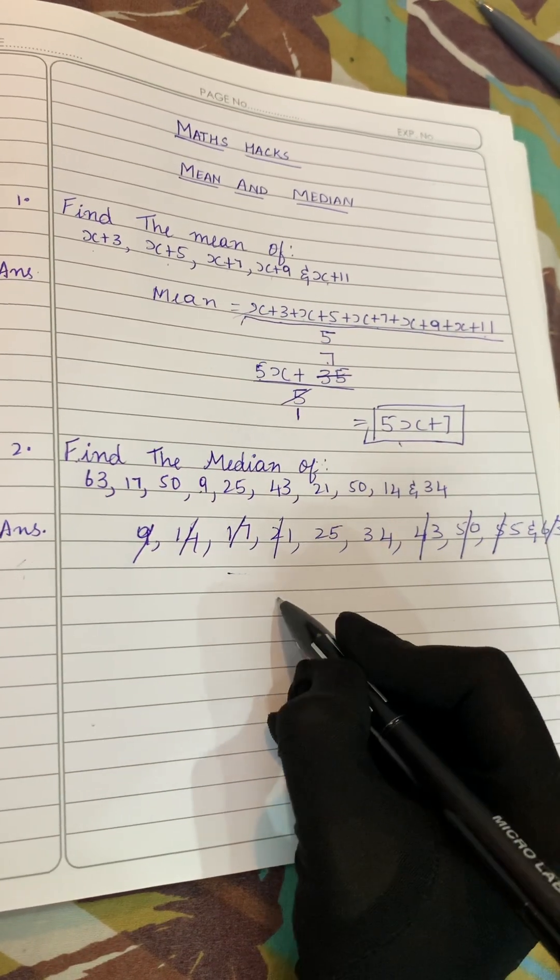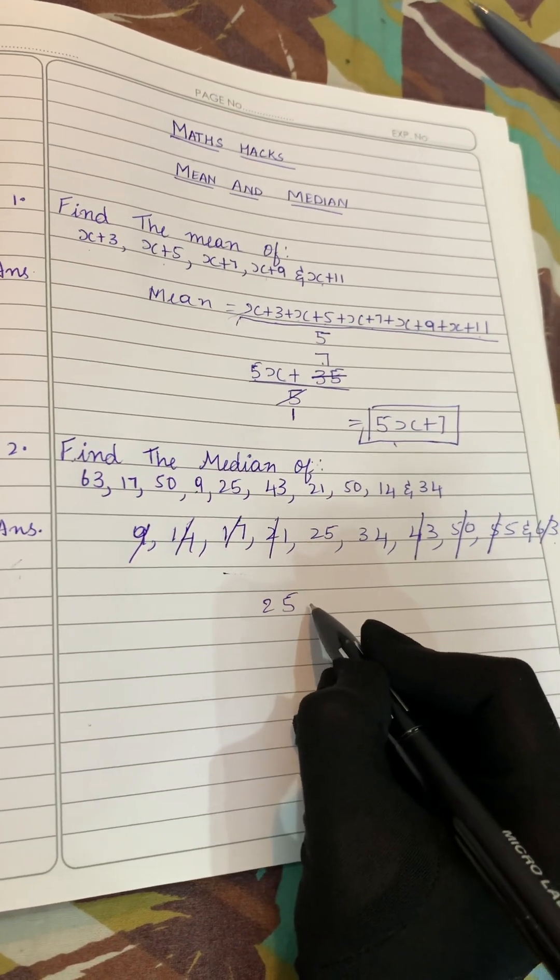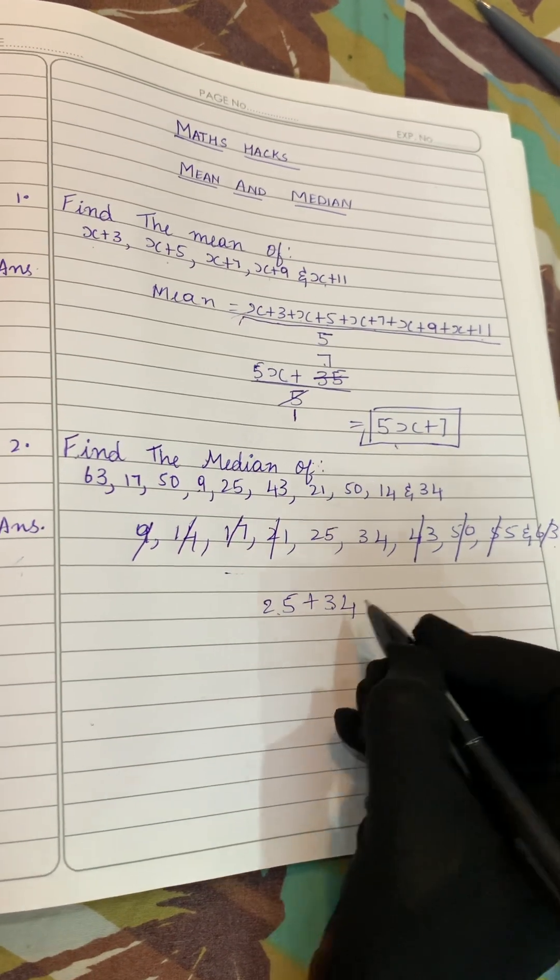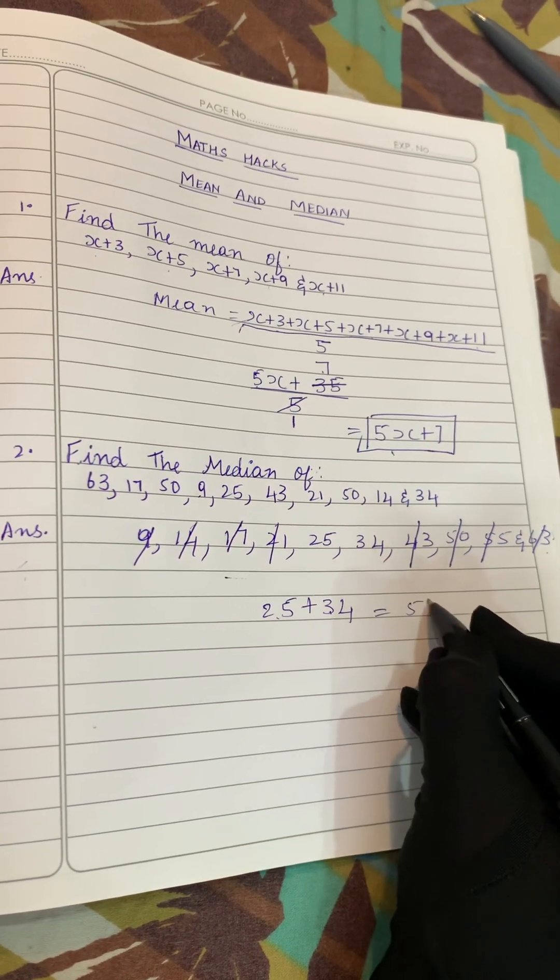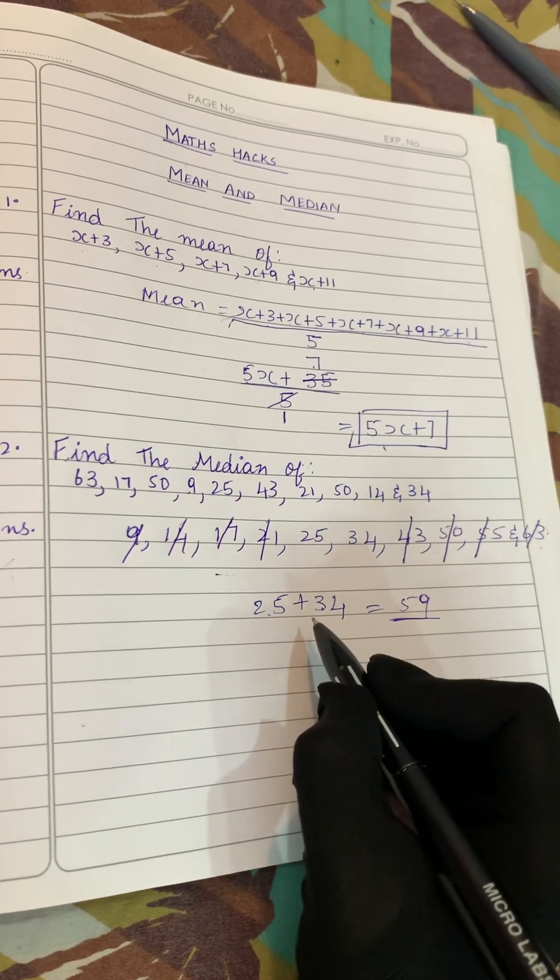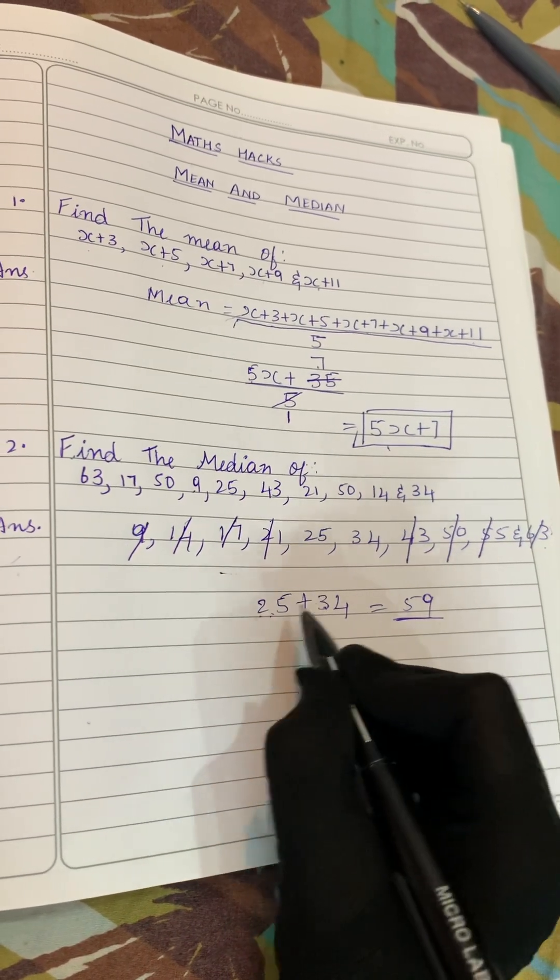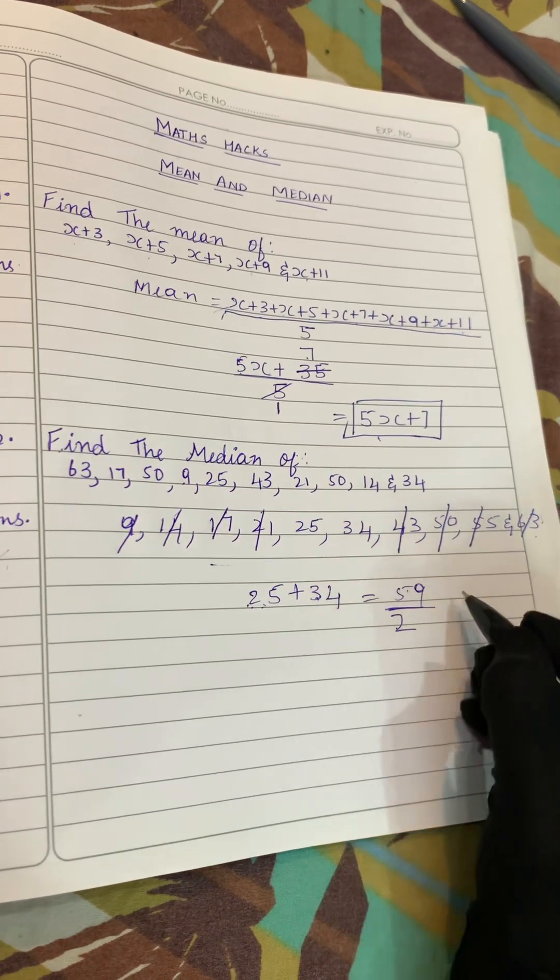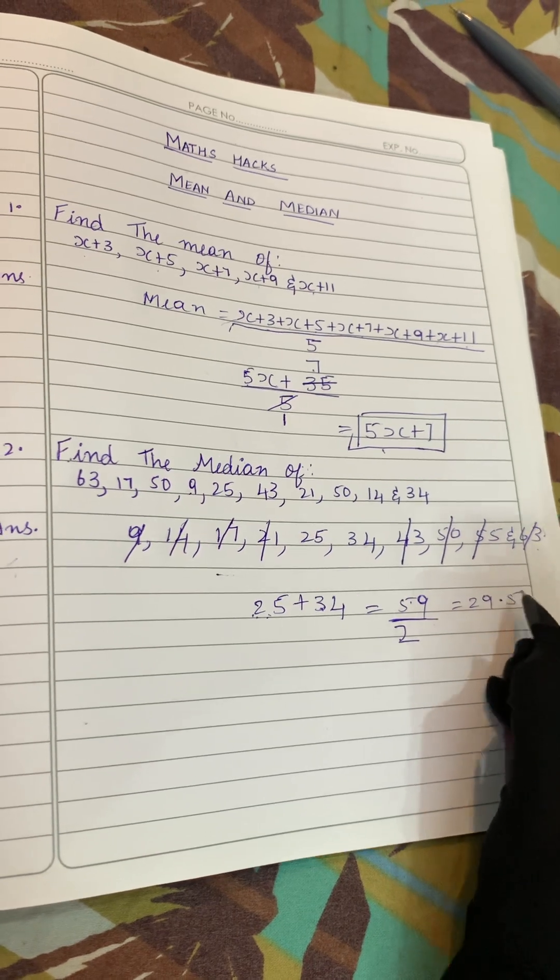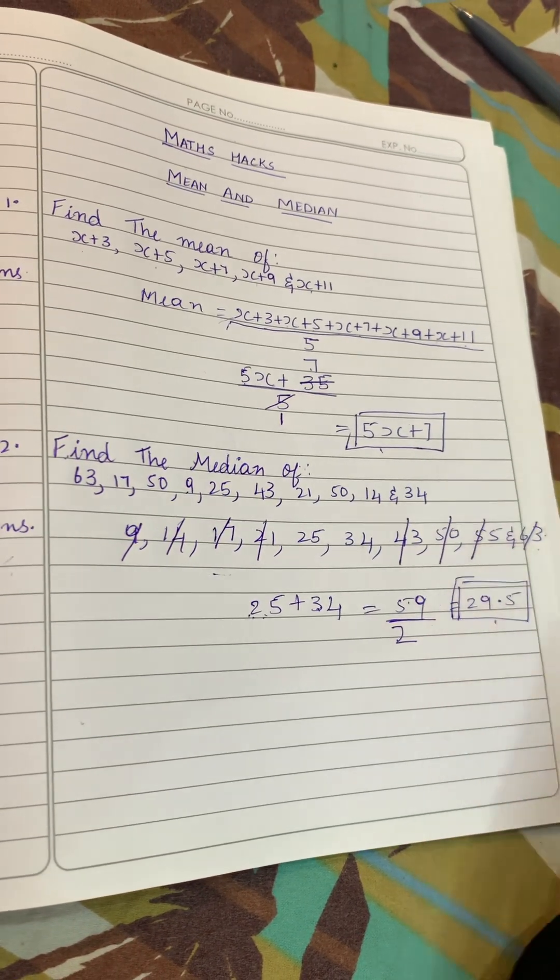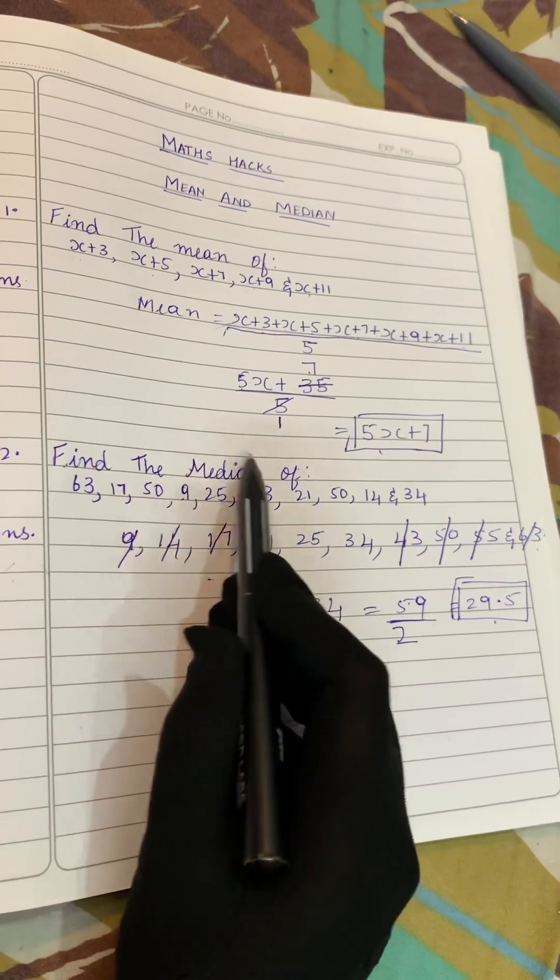So we got the middle value here. We'll take out this middle value, 25 and 34. We will add this middle value: 25 plus 34, we will add, it will get 59. Now we'll divide it with which number? We'll divide it with 2. Why 2? Because we have two numbers here. So we'll divide it with 2. So 59 divided by 2, if we divide we'll get 29.5.